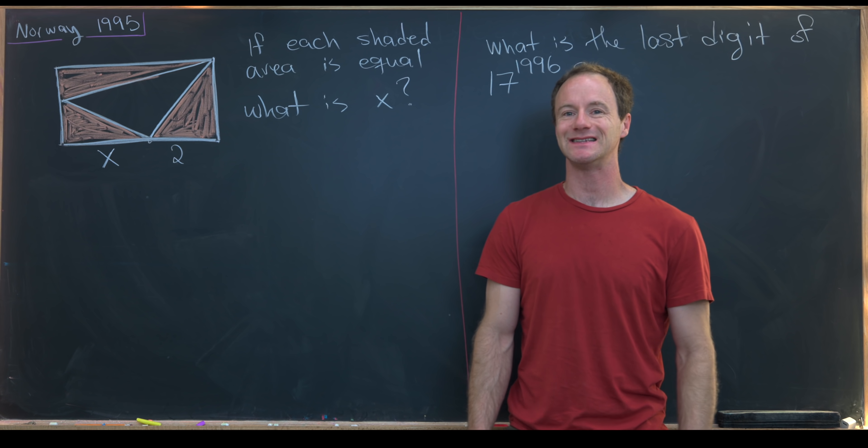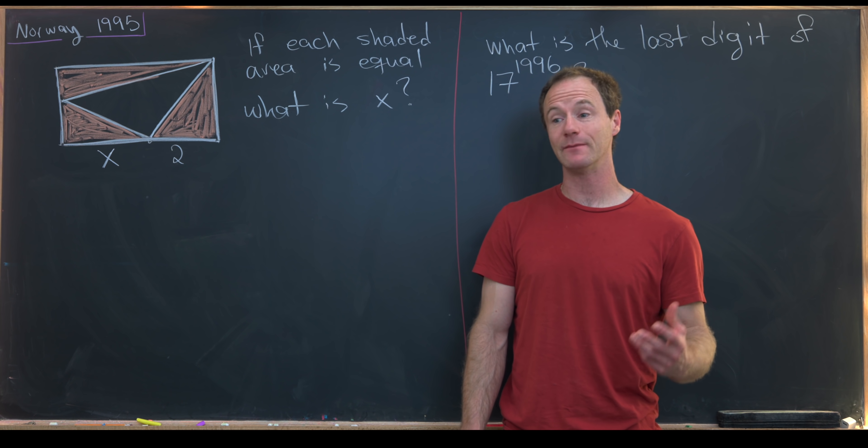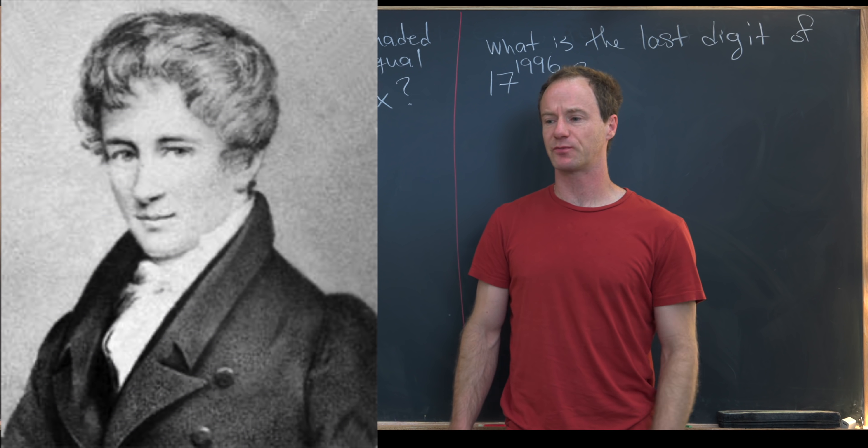Here I've got two problems from a 1995 Norwegian math contest, and this contest is named in honor of Abel, who is known to provide the name for Abelian groups, which are commutative groups.